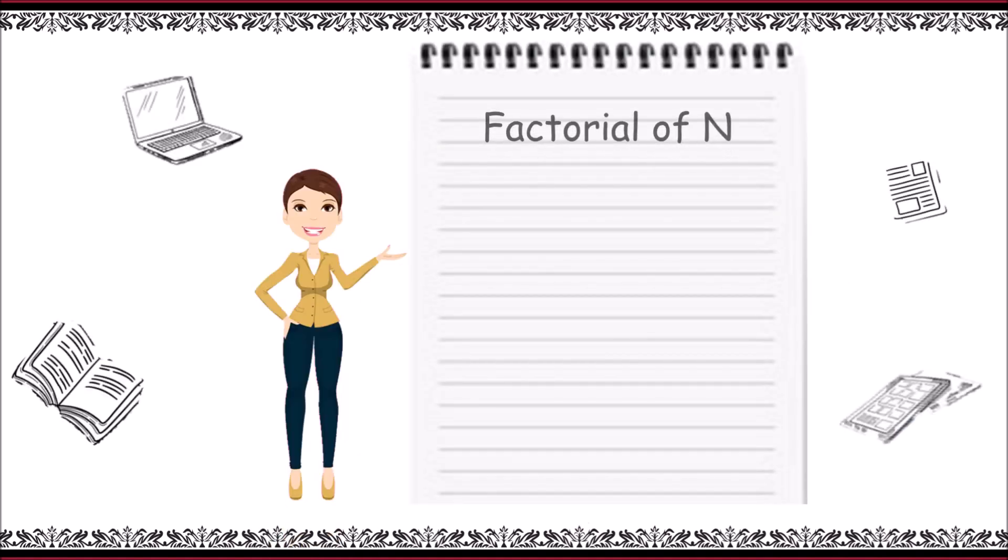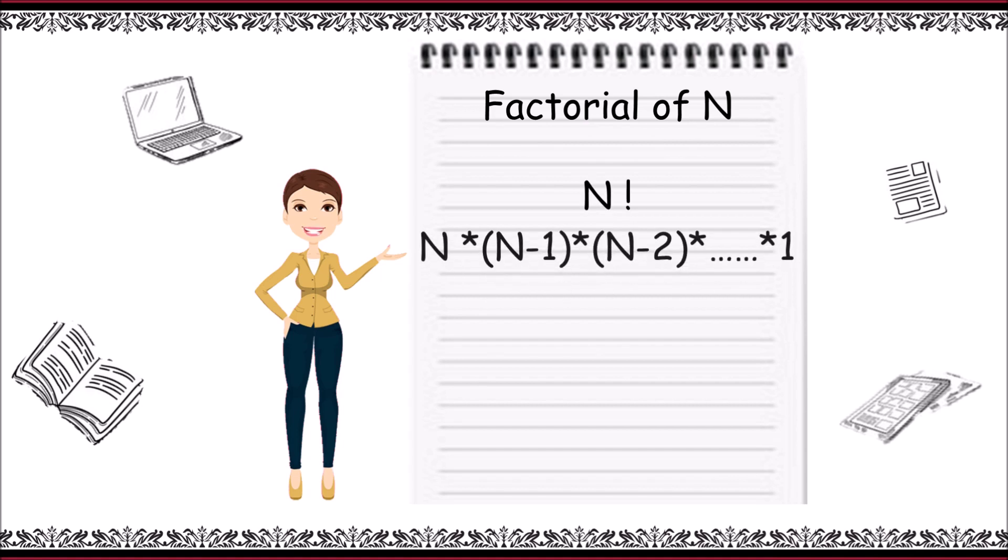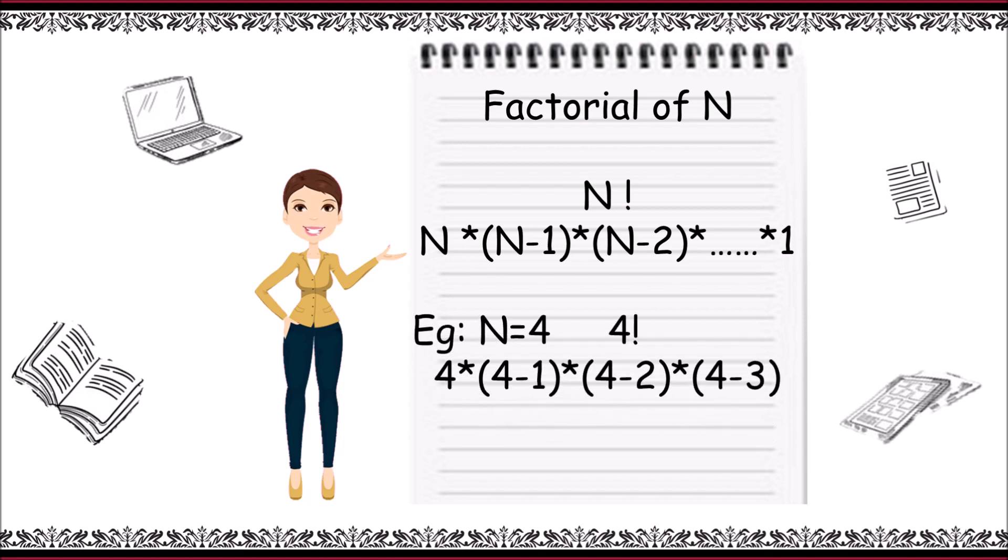For example, factorial of n is denoted with n exclamation symbol, that is n into n minus 1 into n minus 2 and so on up to 1. Consider an example: 4 factorial is 4 into 3 into 2 into 1, which equals 24.